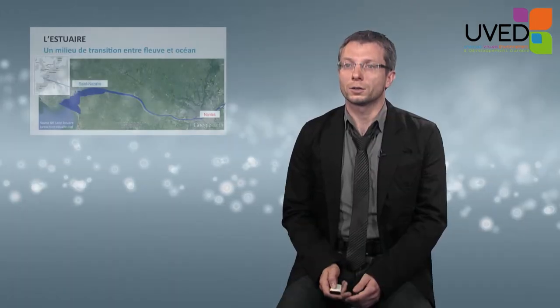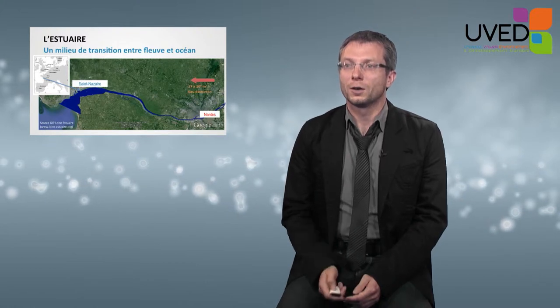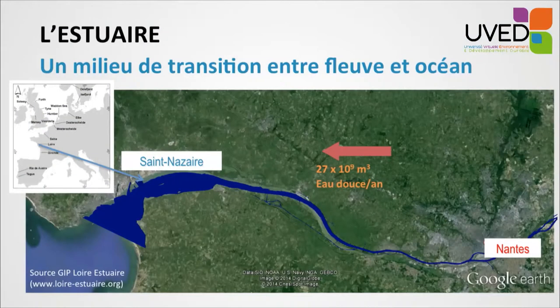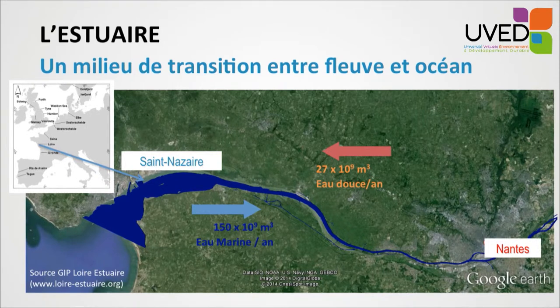If we look at the water volumes in an estuary such as the Loire estuary on the western side of France, we see that freshwater contributions are five times less than marine water contributions to the estuary, which means that the water is brackish in the estuary.